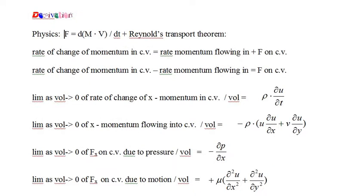We have derived the Navier-Stokes equations, so let's briefly summarize the derivation. We started with Newton's second law of motion, force equals mass times acceleration, and wrote it in the equivalent form force equals the rate of change of momentum. The Reynolds transport theorem states that the rate of change of momentum in a small control volume equals the rate that momentum is flowing into the control volume plus the force acting on the control volume. We move the momentum flow rate to the left side of the equation, divide by the volume of the control volume, take the limit as volume approaches zero, and the result is the Navier-Stokes momentum equations.